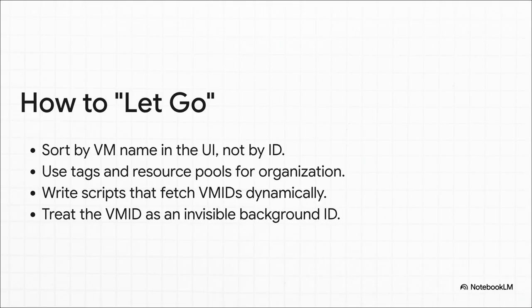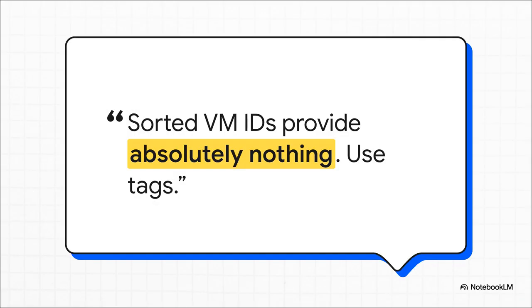So how do you actually let go? It's all about changing how you look at the interface. First thing: just stop sorting by the ID — sort by the VM name instead. Start using the tools that are already there for you, like tags and resource pools, to actually organize your stuff. And if you're scripting, never hard-code a VM ID; always fetch it dynamically. You basically start treating the VM ID like an internal database key — it's there, it's important to the system, but you almost never need to see it or touch it directly. A perfectly sorted list of numbers gives you a false sense of organization, but what does it actually do for you? Nothing. Tags, on the other hand, give you real, functional, searchable organization — they're just the better tool for the job.